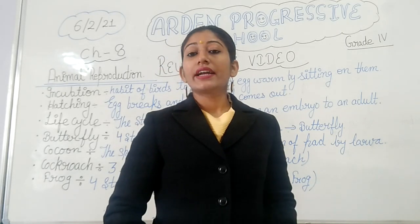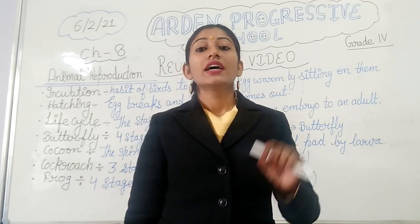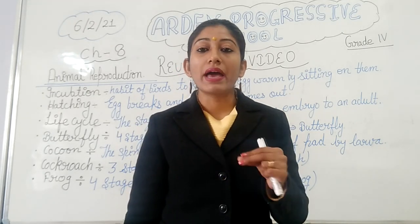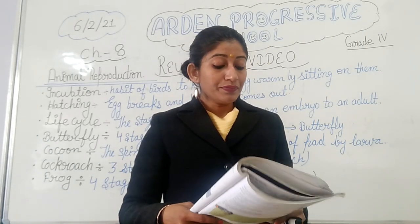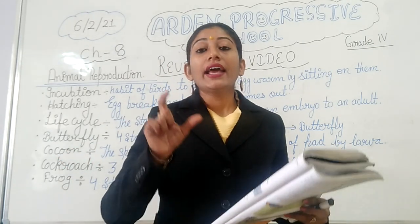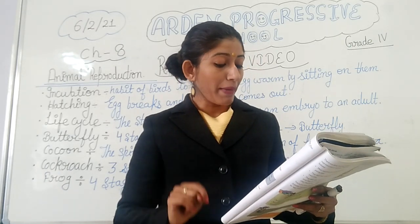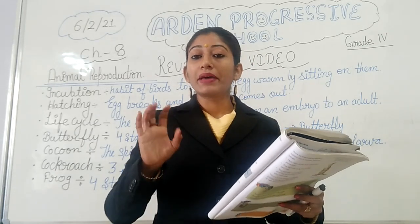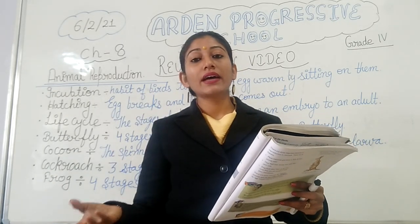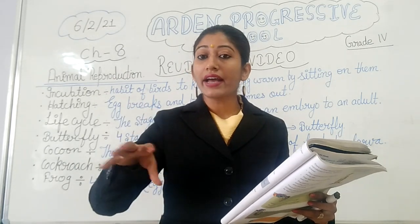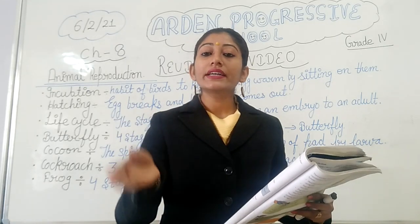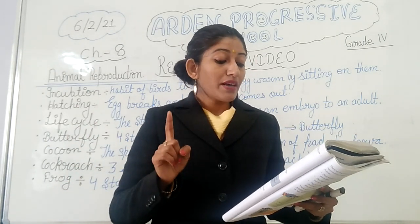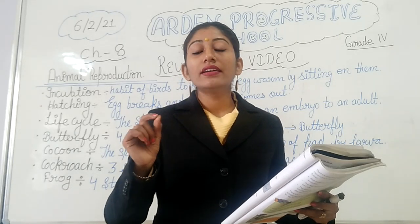Then we have animals that give birth to babies. What are these animals called? The animals that give birth to well-developed young ones are called mammals. And when we talk about fish-like animals like whale and dolphin, they also come under the category of mammals. Some specific things about mammals: the baby develops inside the womb of the mother. In other animals that lay eggs, the baby develops outside. But in the case of mammals, baby develops inside the womb of the mother, and the mother feeds the baby with her own milk and protects it until it can look after itself.